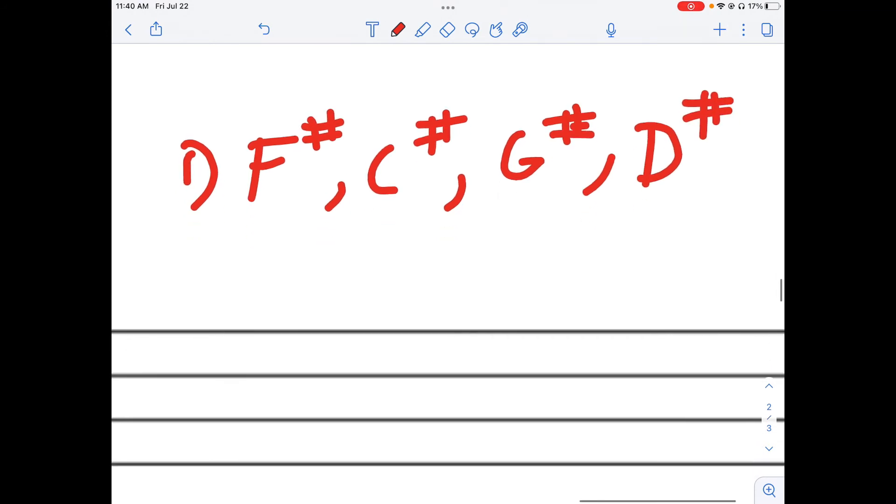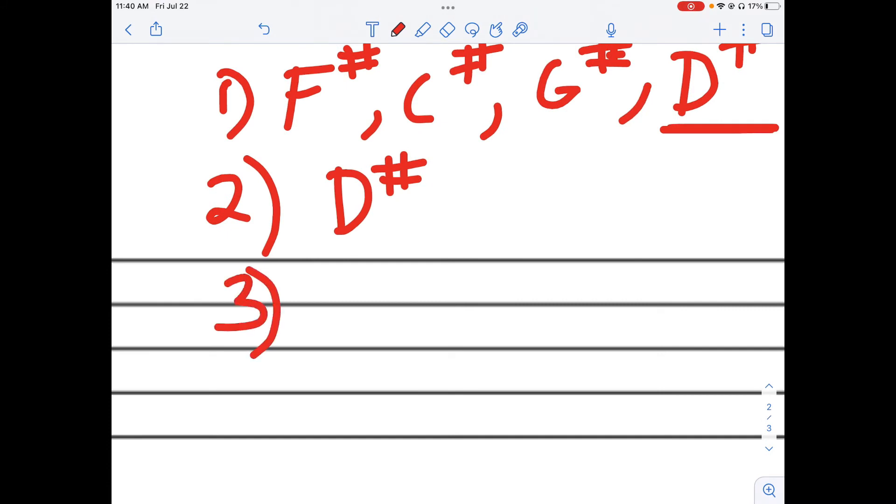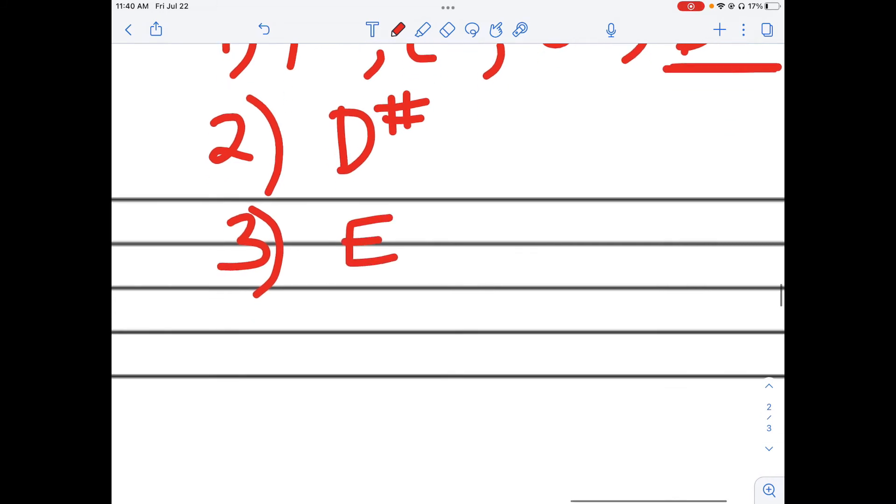Our next step is to go a half step above D sharp. So a half step above D sharp would be E, so we're in E major.